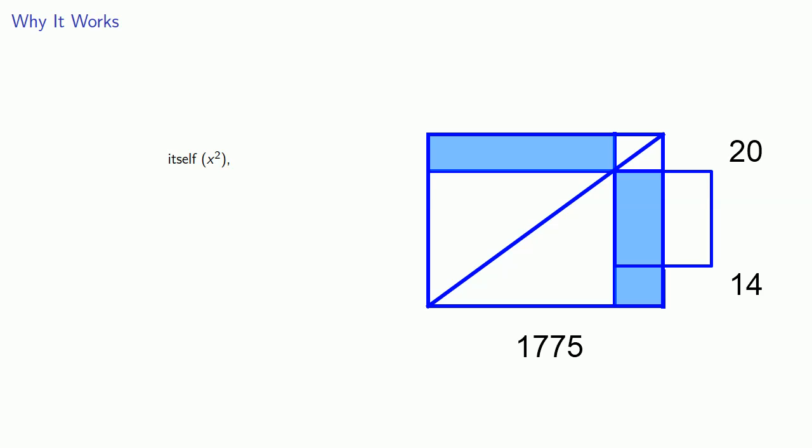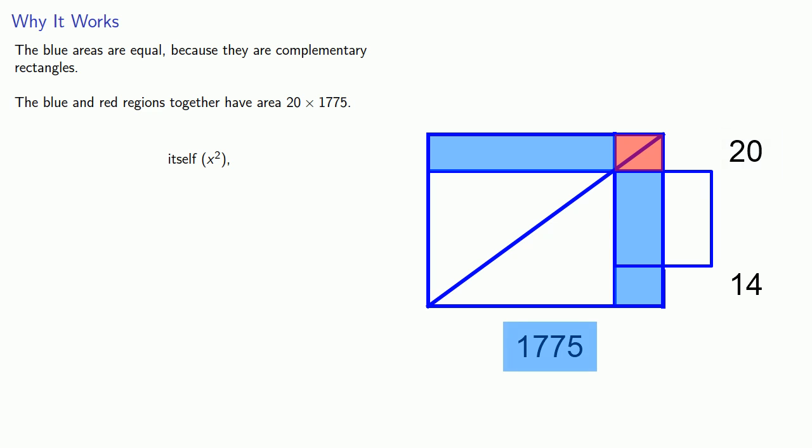First, the blue areas are equal because they're complementary rectangles. Now notice our complementary rectangles meet in this corner piece. The blue and red regions together have an area of 20, that's the northward distance, by 1775, that's the westward distance. Now even though we calculated this as the area of the horizontal blue and red regions, it's the same as the area of the vertical blue and red regions.